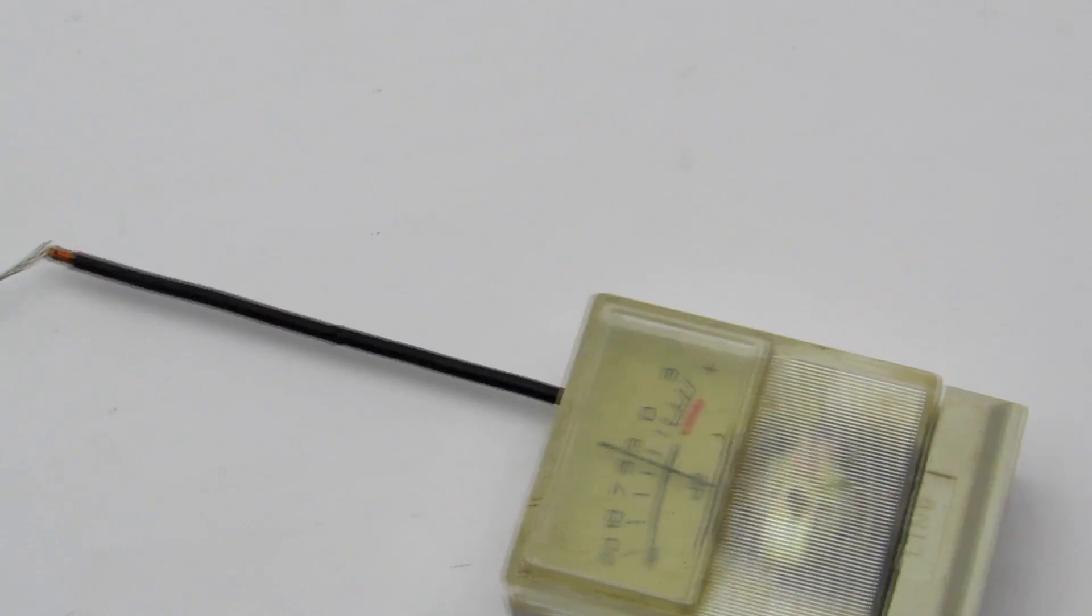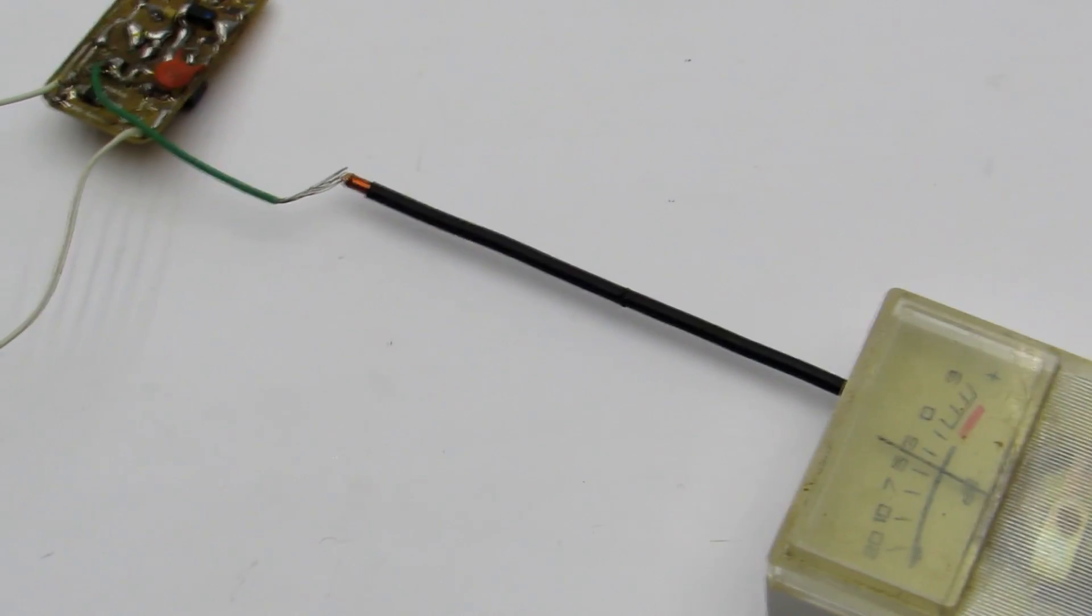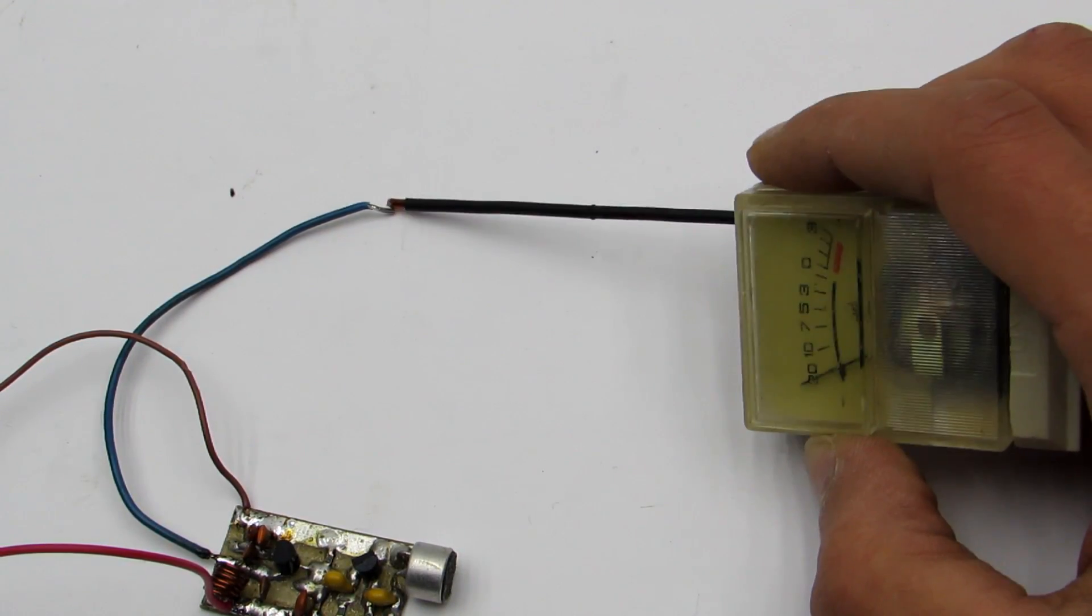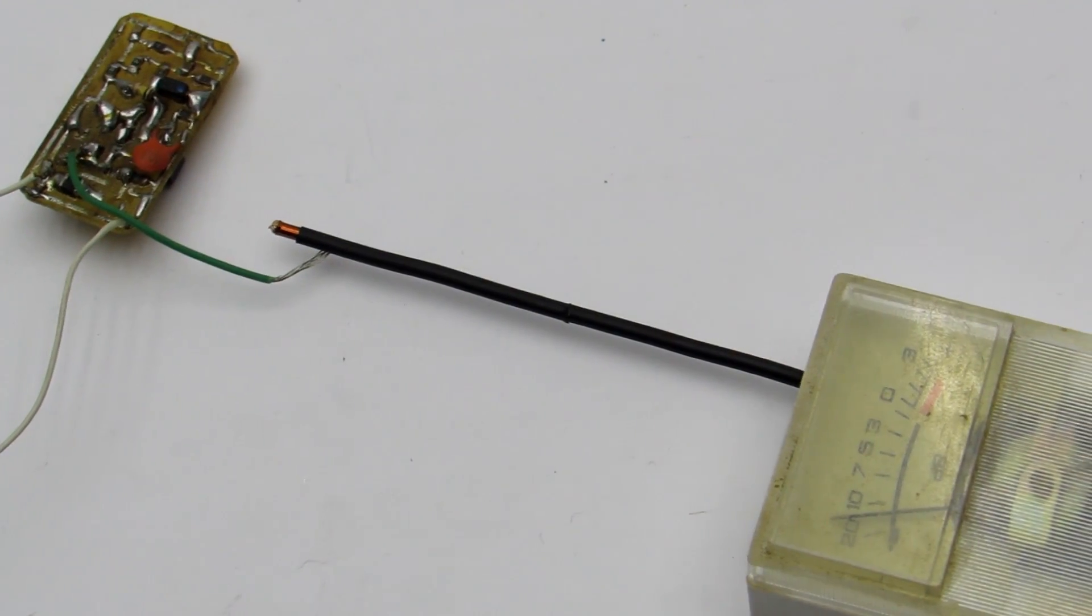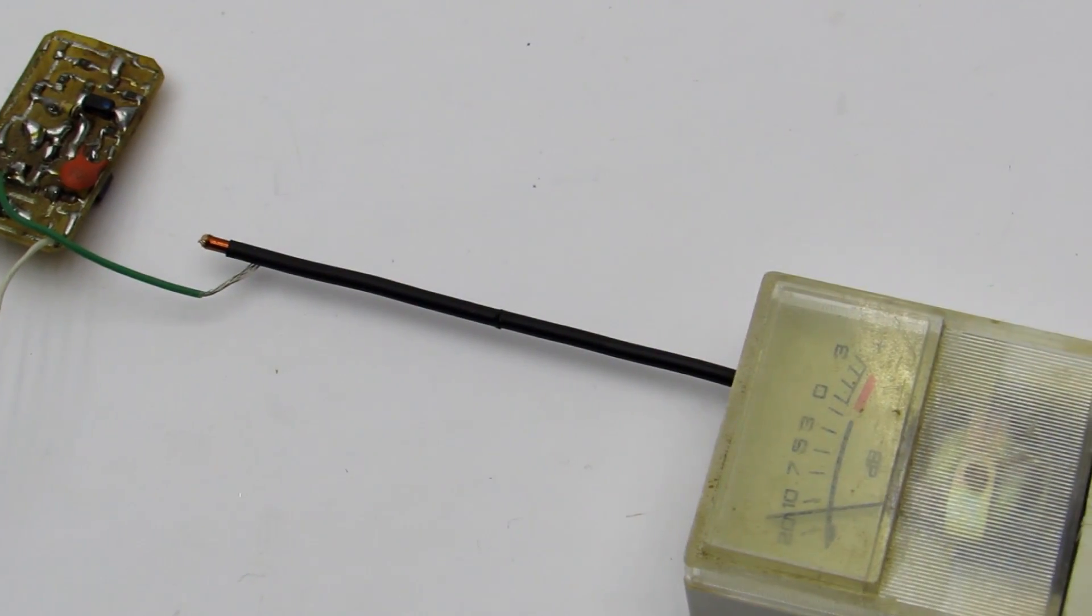During setup, you can connect the detector antenna with the transmitter antenna, but arrow can deflect without direct contact of antennas too. It all depends on the transmitter power.